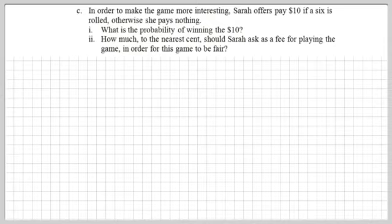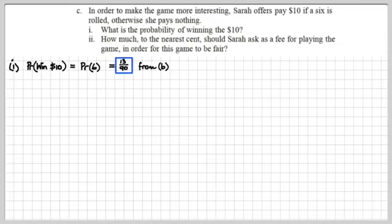First part, what is the probability of winning the $10? And secondly, how much to the nearest cent should Sarah ask as a fee for playing the game in order for this game to be fair? This one looks to me here to be extremely easy. The probability of winning the $10, surely, is the probability of throwing a six, isn't it? So I would think that's what we've already worked out, 13 ninetieths from part B. So how did you go with that? Good on you if you got it right.